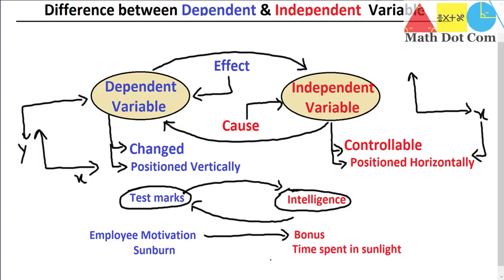Another example: sunburn and time spent in sunlight. Time spent in sunlight is causing the sunburn, so the cause is time spent in sunlight and the effect is the sunburn. Sunburn is the dependent variable and time spent in sunlight is the independent variable. If you consider it the other way — sunburn as cause and time in sunlight as effect — that doesn't make sense. Sunburn is not the cause; it is the result, the effect.